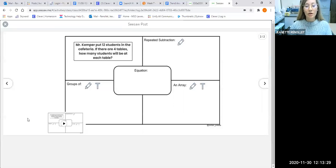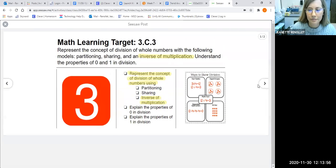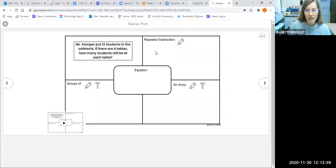Okay, so we have a word problem. Mr. Kemper puts 12 students in the cafeteria - that means all together I have 12 students. To divide means to break it into smaller groups, so I'm going to start by showing repeated subtraction. Let me go ahead and get this open for us. Over here I have repeated subtraction. So I have 12 students, and I see in my word problem that there are four tables, so I can subtract four over and over again until I get to zero. So 12 minus four - you get a difference of eight.